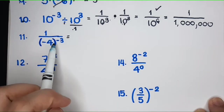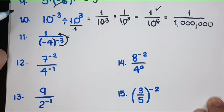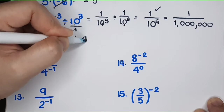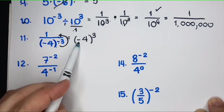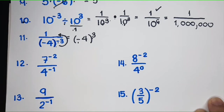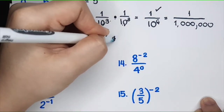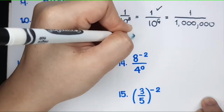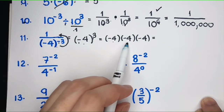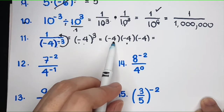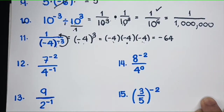For this problem, how do we write it without a negative exponent? The base moves to the numerator. Notice the negative sign on the base does not disappear — only the negative on the exponent goes away. So we have negative 4 raised to positive 3, which means negative 4 times negative 4 times negative 4. Negative 4 times negative 4 is positive 16, and positive 16 times negative 4 gives negative 64.